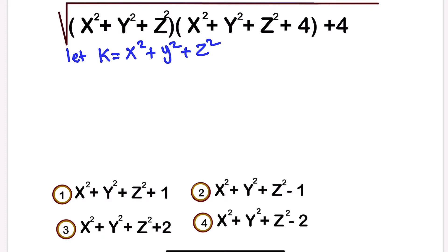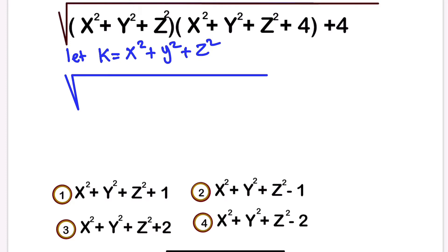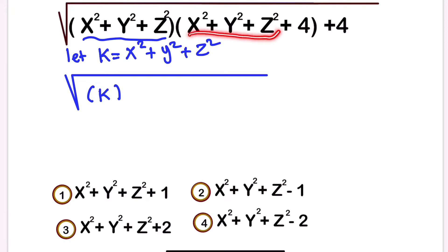So if we call this k and we want to rewrite the expression, we are going to have k in the bracket. And this part will also represent k, so this will be k plus four.